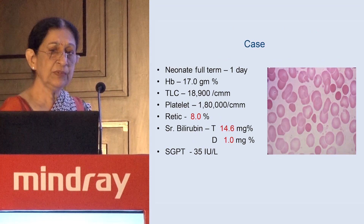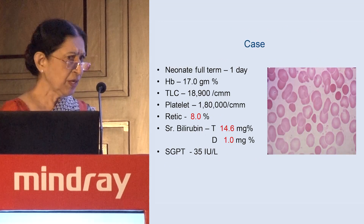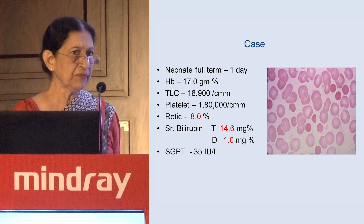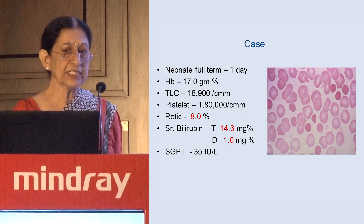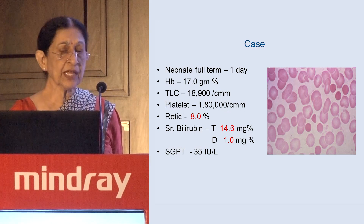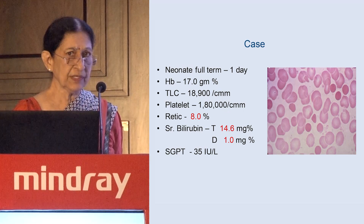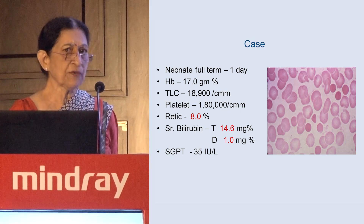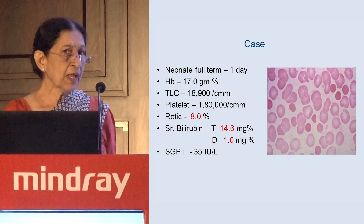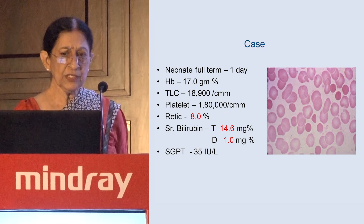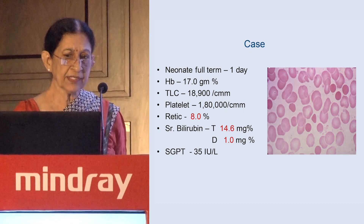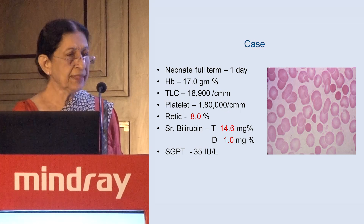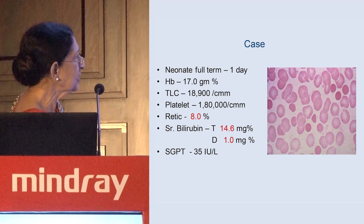Let's look at this baby: full term, normal neonate, day one, just about 24 hours old. Hemoglobin is 17 grams, 18,900 WBCs with 1,80,000 platelets, retic of 8%, hyperbilirubin 14 total — one indirect, one direct. SGPT is normal. That is the blood picture of this baby.